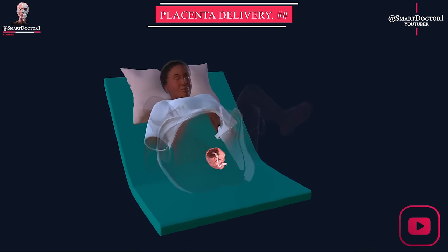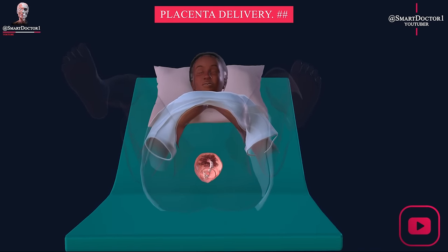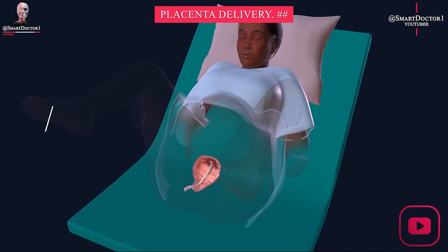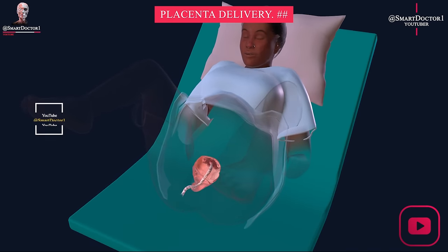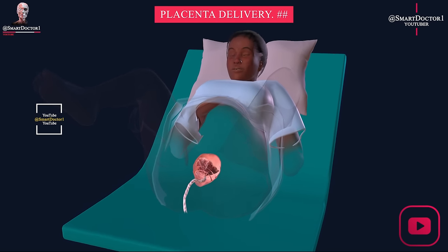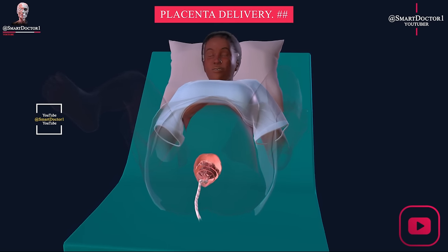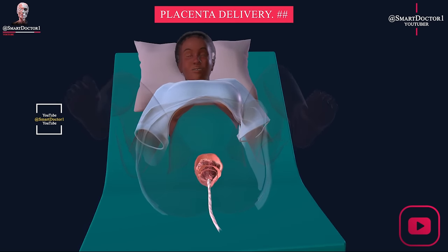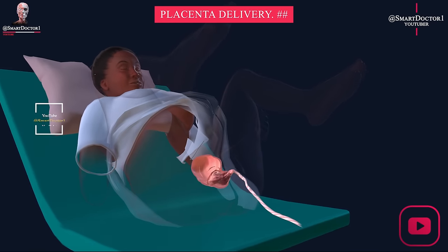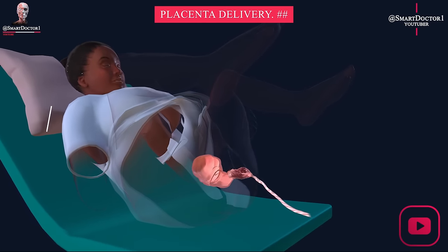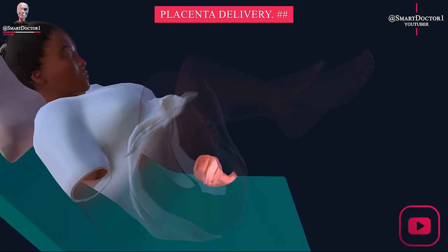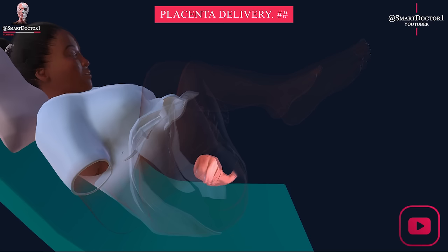Placenta delivery is the final stage of labor and typically lasts 10 to 30 minutes. Mild contractions help separate the placenta from the uterine wall and expel it from the body. The healthcare provider may assist by pulling the umbilical cord and pressing on the abdomen to aid the placenta delivery.